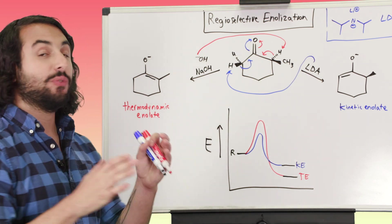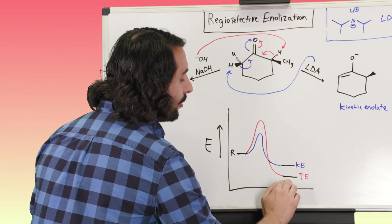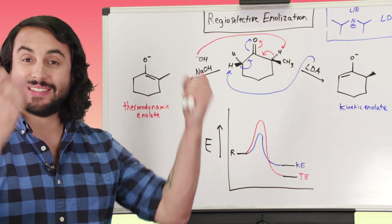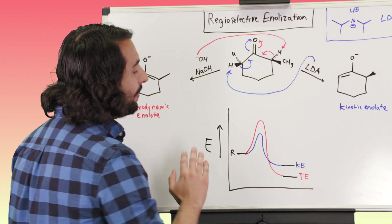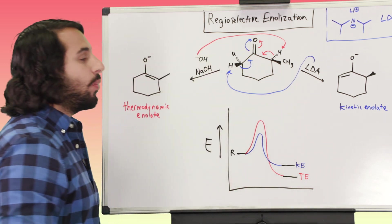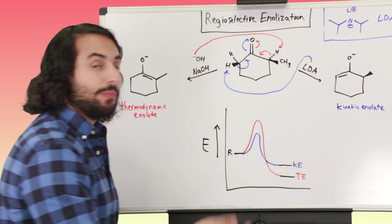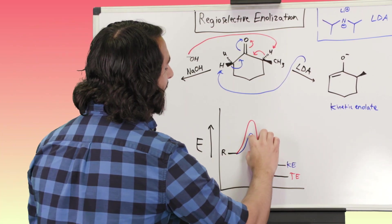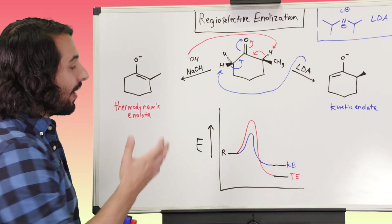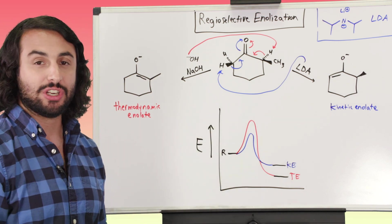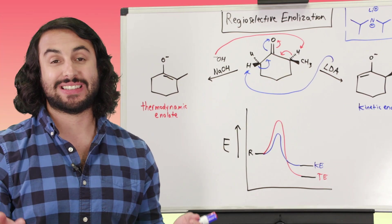When looking at thermodynamic versus kinetic control: thermodynamic control brings us to the lowest energy product, and we can achieve that by heating things up — if we heat enough, we can get over any activation barrier and go to the lowest energy product. Cooler temperatures favor a kinetic situation, where the product is dictated by what has the lowest activation energy, since molecules in solution can only get over a lower activation barrier and not a higher one. That's what we need to know about regioselective enolization and thermodynamic versus kinetic control.